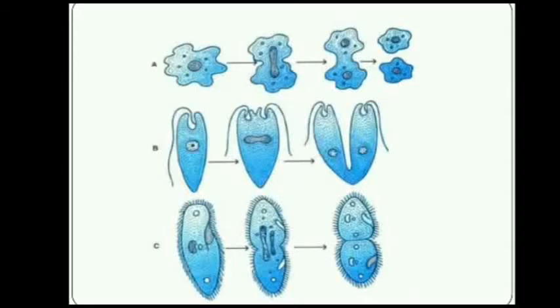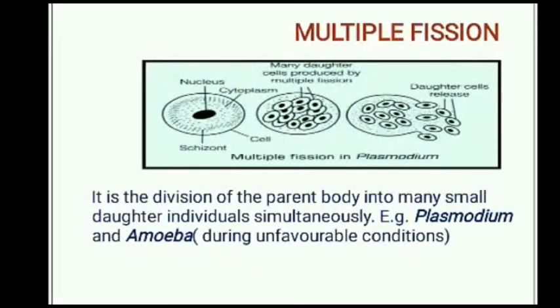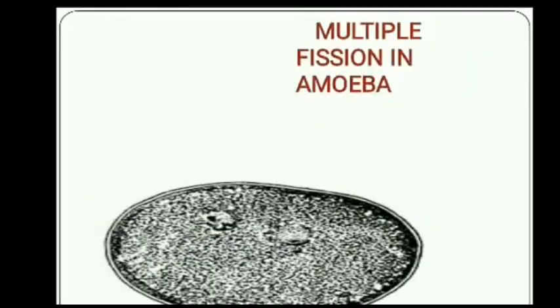What is multiple fission? Multiple fission is the division of the parent organism or parent body into many small daughter individuals simultaneously. Examples of organisms with multiple fission are plasmodium and amoeba. In amoeba, multiple fission occurs during unfavorable conditions. Plasmodium is a malarial parasite.